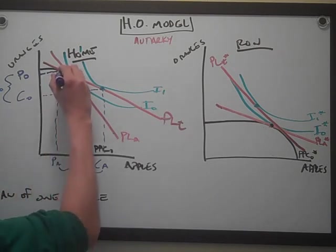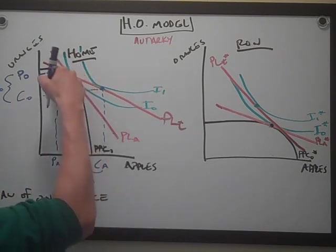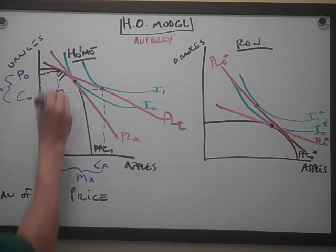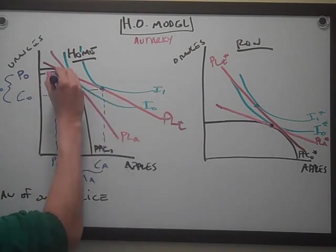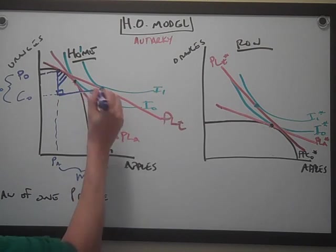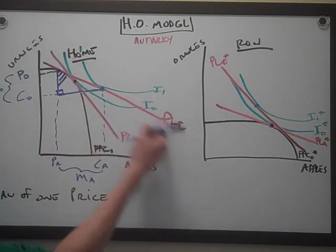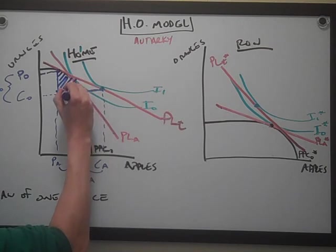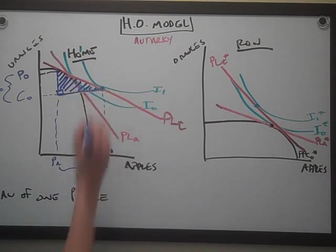From that we can get the trade triangle. The trade triangle is that right angle formed by the dotted lines for consumption and production. The hypotenuse is the PLT — price line in trade — so that right there is the trade triangle.